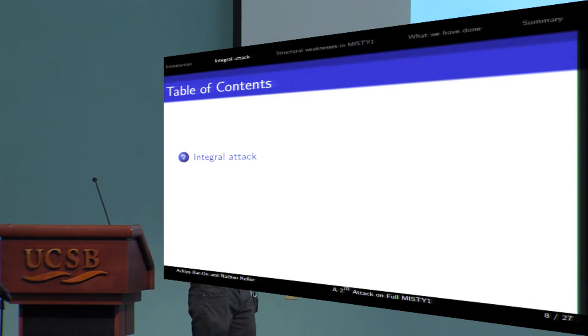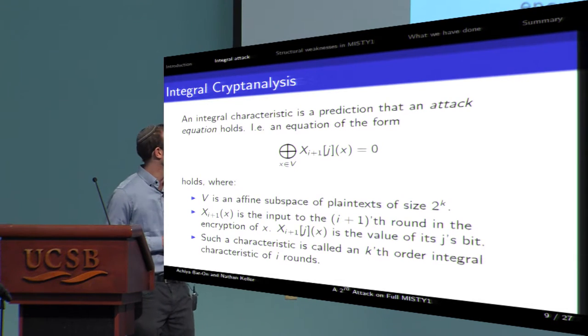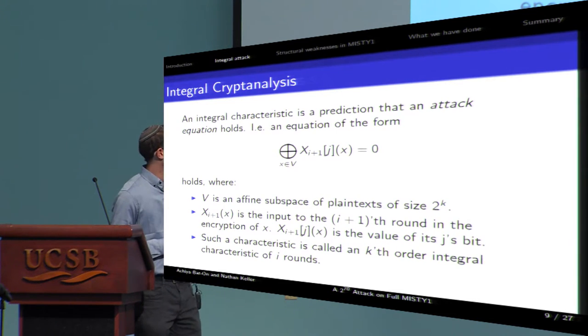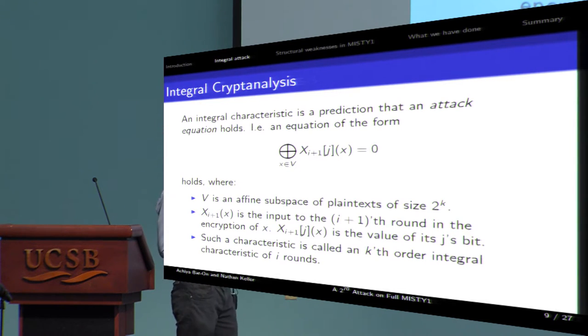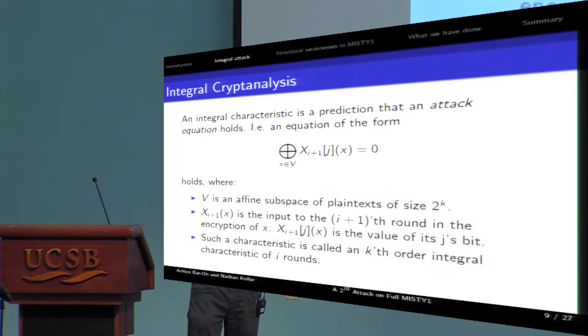Integral attacks use an integral characteristic. And what is that? It is a prediction that an equation holds. The equation is called attack equation, and it predicts that the sum over some intermediate values equals zero in some bit after i rounds. Such a characteristic is called i-round integral characteristic. And the full name is k-th order integral characteristic of i rounds, where k is the log of the number of values examined.